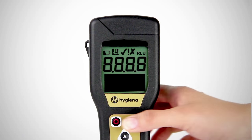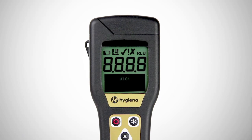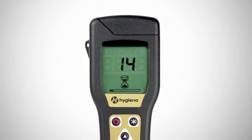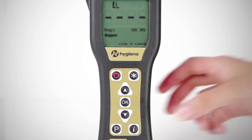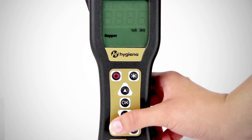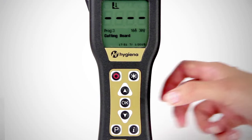Turn on the luminometer before you begin testing to allow time for the system's calibration self-check to run. If you've already programmed test locations into your luminometer with SureTrend software, select a location to be tested.